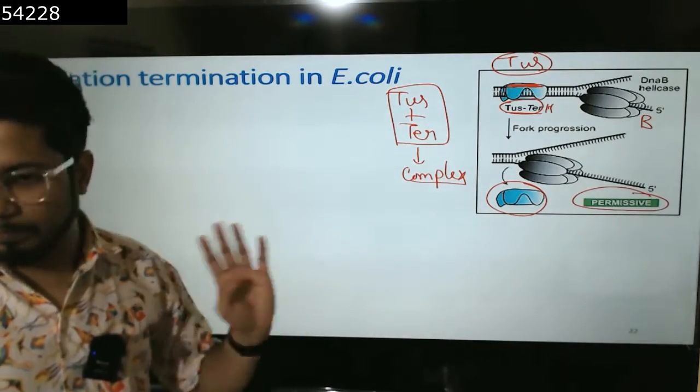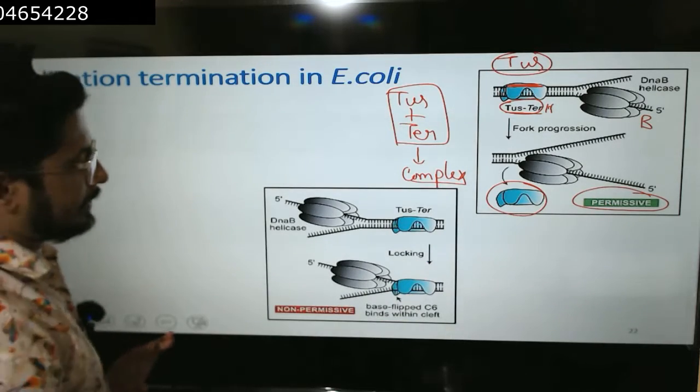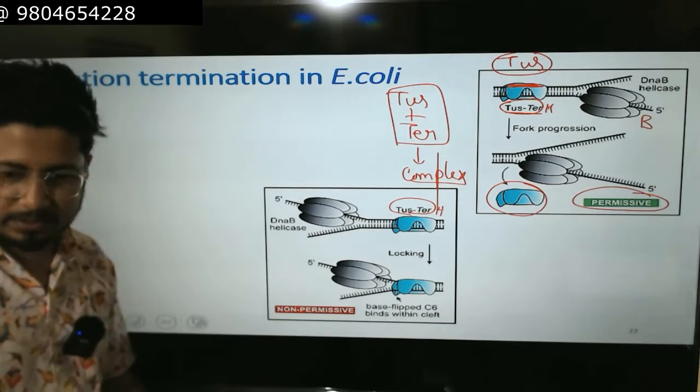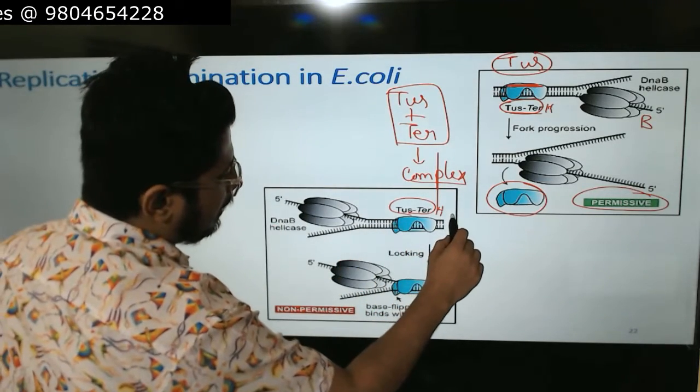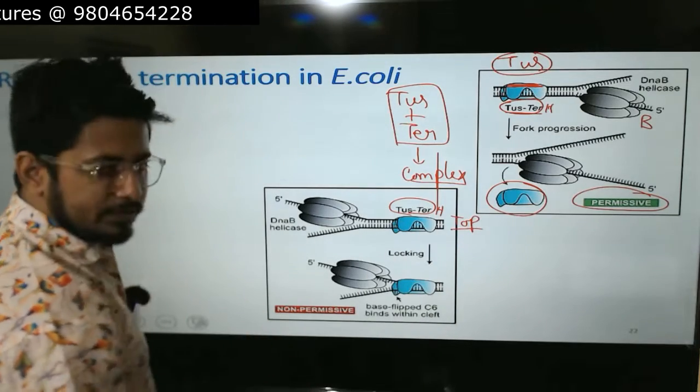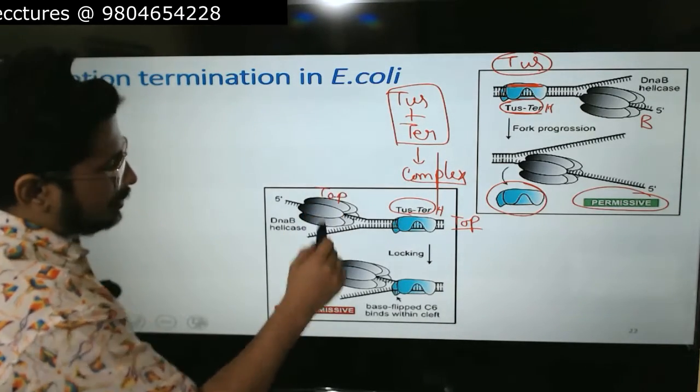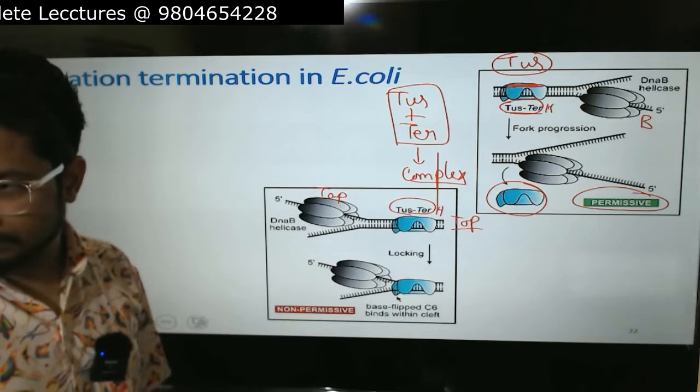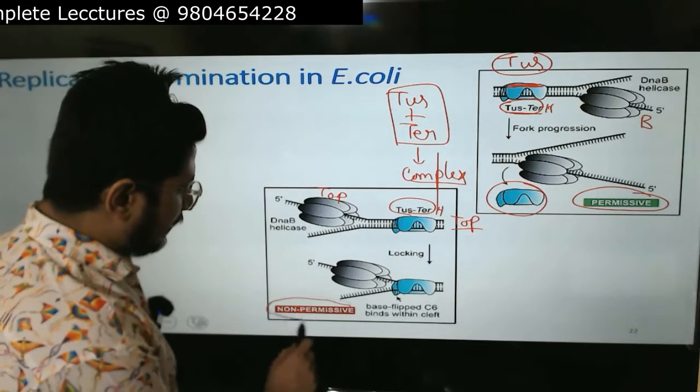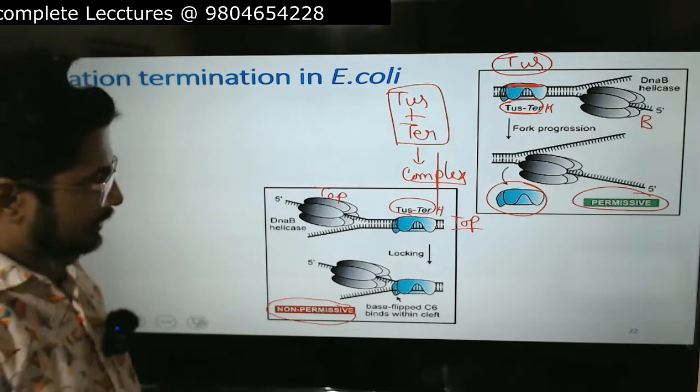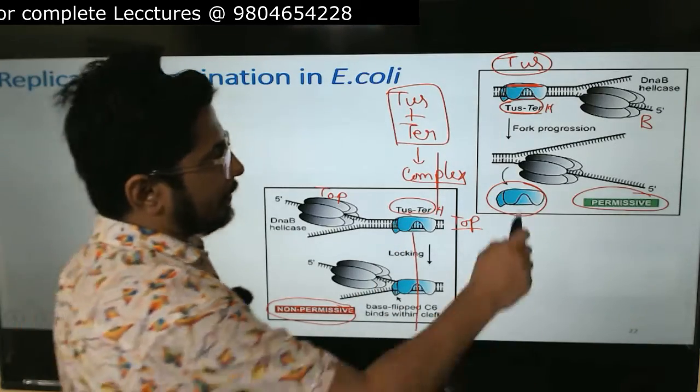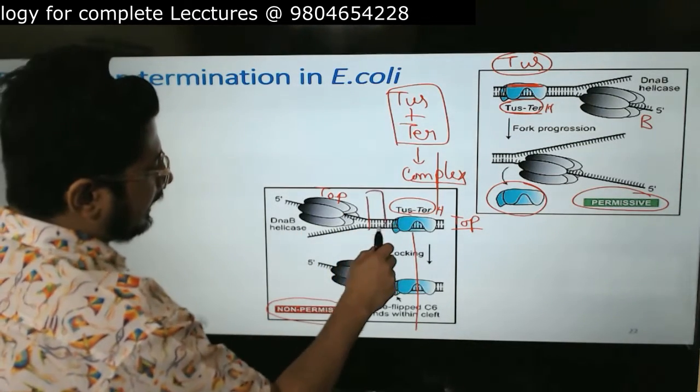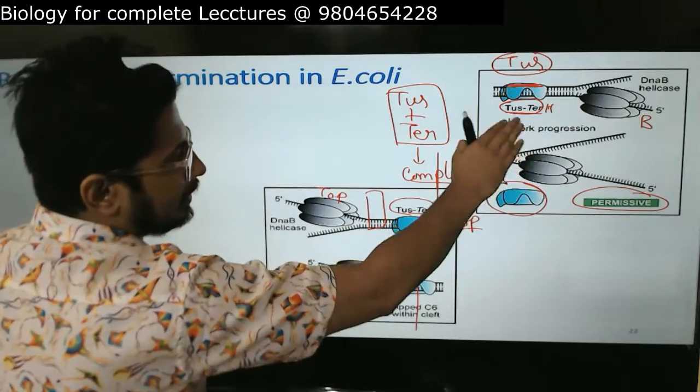As the helicase is moving, this Tus and ter is mainly focused on the above strand. The strand above - bottom strand is free. Helicase can easily move the Tus complex from the Tus, and helicase can move. We call it permissive movement. This is where forks still move. This is the place where we say hitting blue.